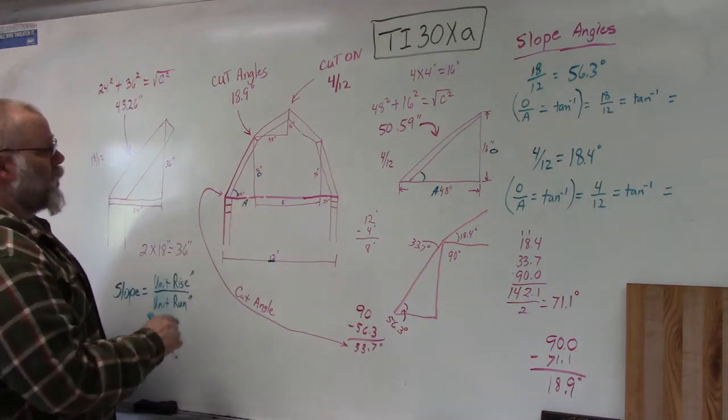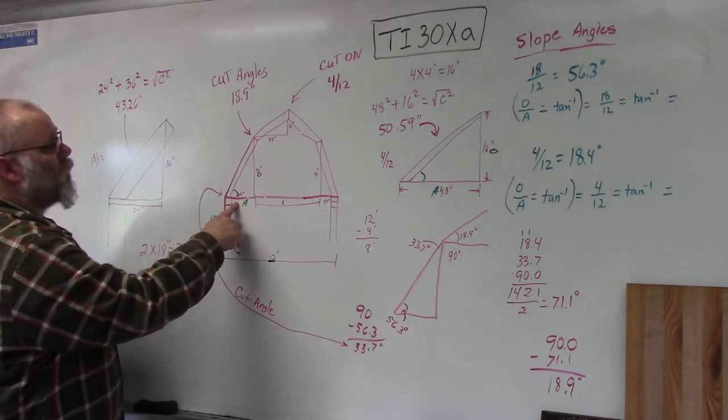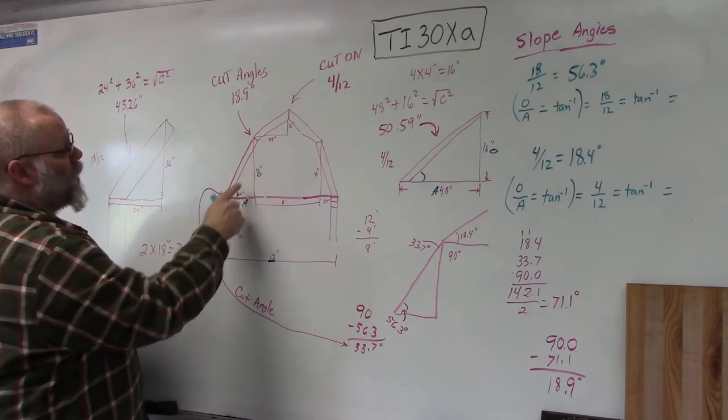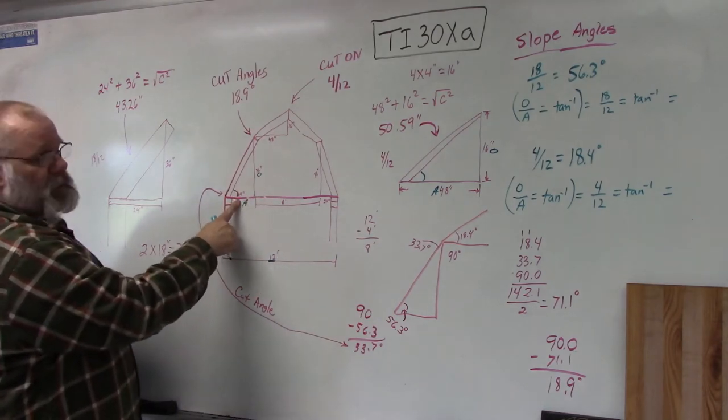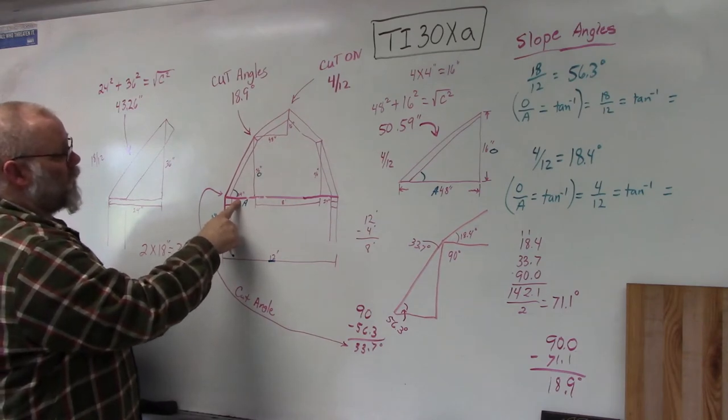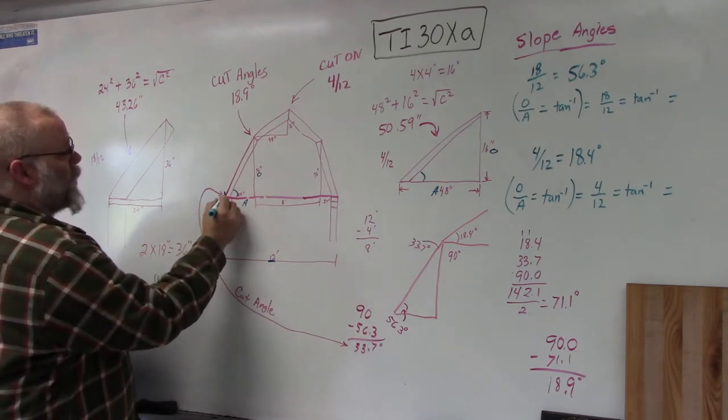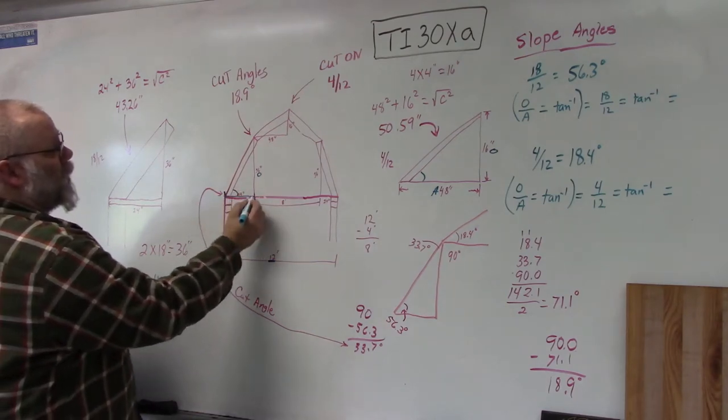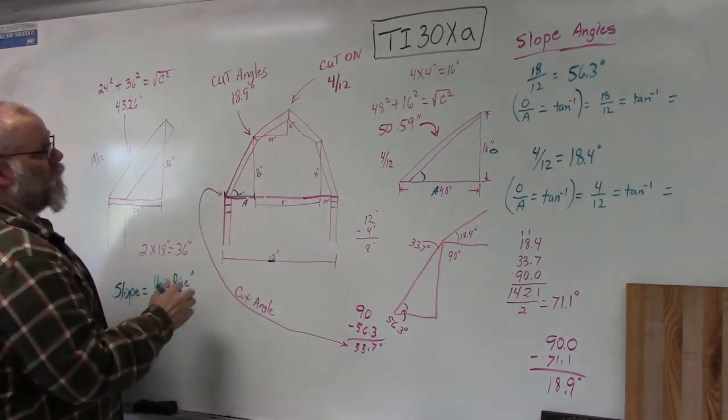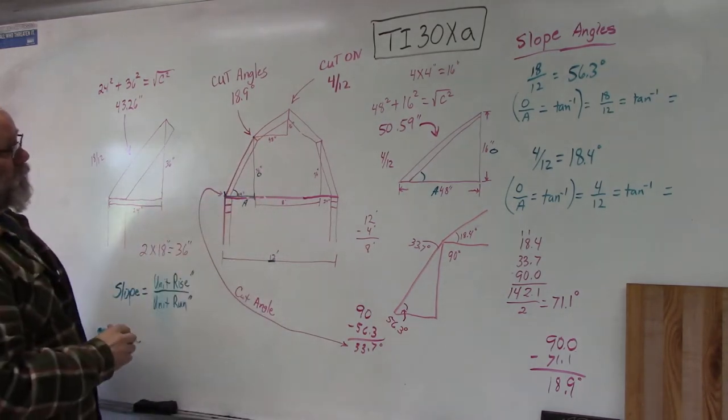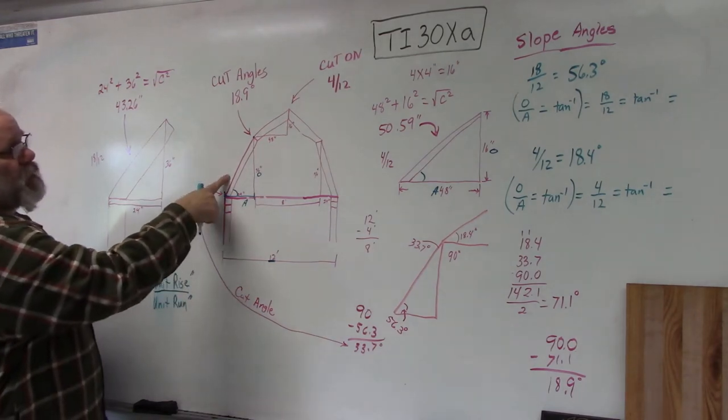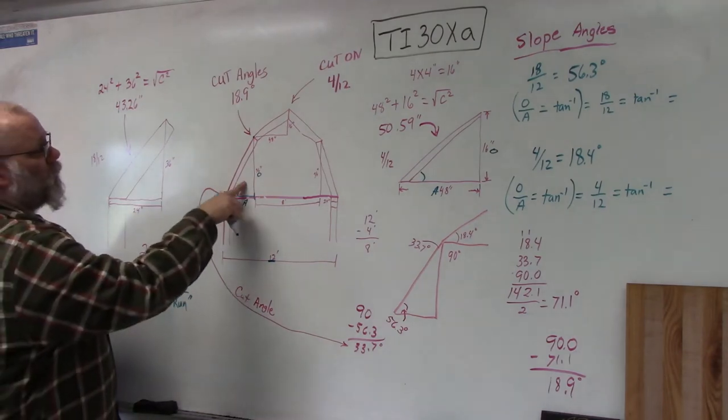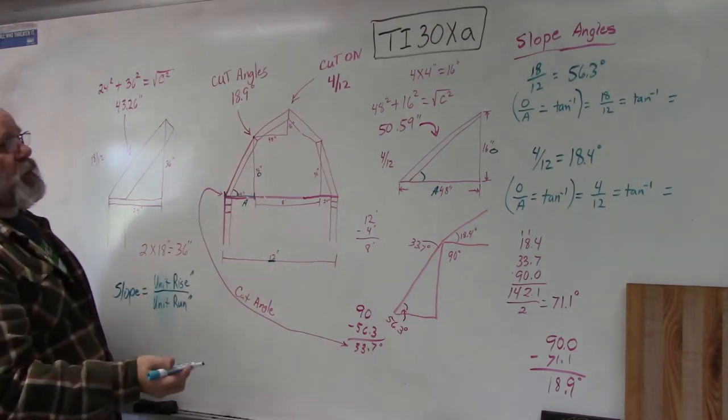Now how do we figure lengths? For the vertical height we're going to take 18 times 2 and get 36, and for the bottom part we're going to take 12 times 2 and get 24. So my distance from the outer edge of my building is 24 inches, and up to that point will be 36 inches. To figure this rafter length I use Pythagorean theorem which is a² + b² = c².